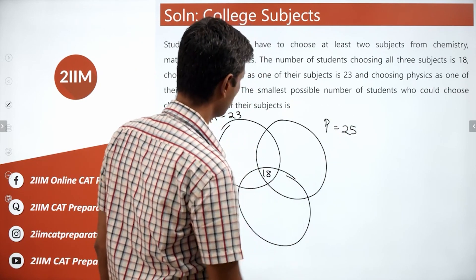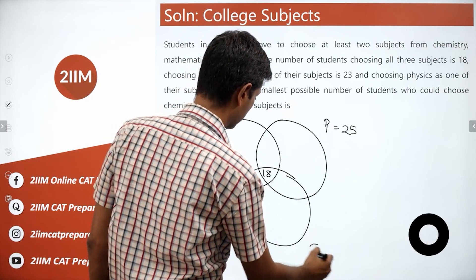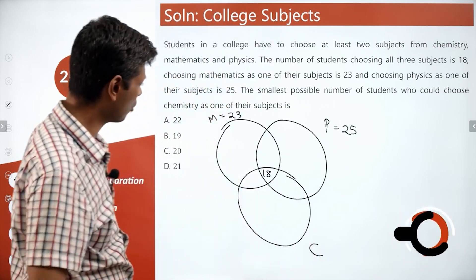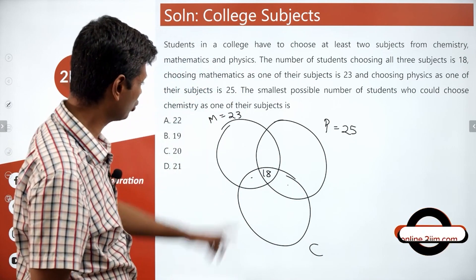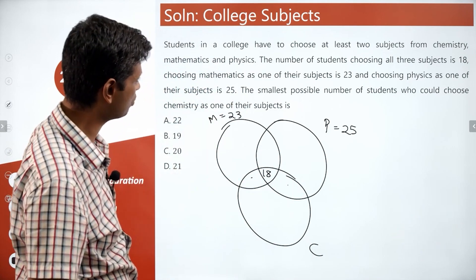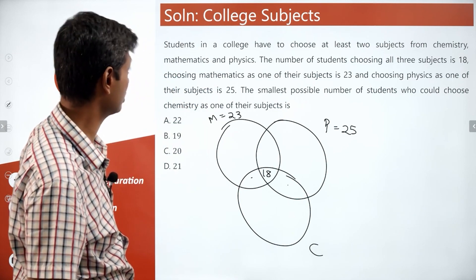We want to find the smallest possible number of students who could choose chemistry. When it is smallest, then these two should be as small as possible, right? So could these two be zero?